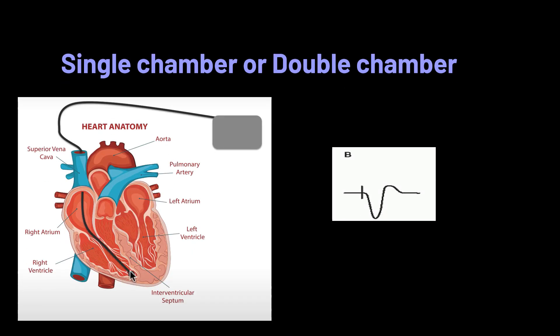Single chamber ventricular pacing places the lead in the ventricle. This ventricular pacemaker looks for a QRS complex and fires into the ventricle. If no QRS complex is sensed, the pacing spike will be followed by a wide QRS complex.